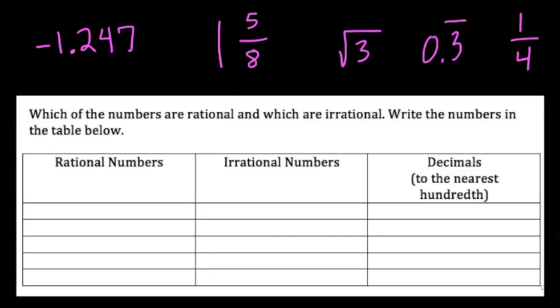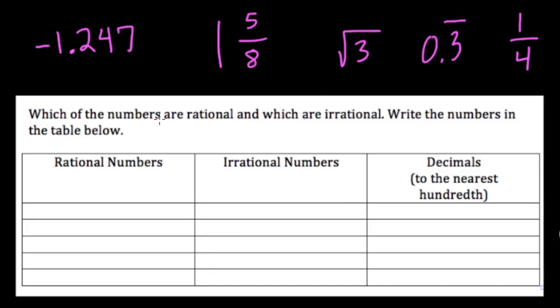Okay, so we have this list of numbers here, and what we need to do is determine which of them are rational and irrational, and then write these numbers in this table right here.